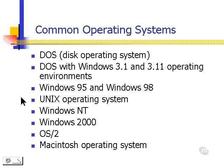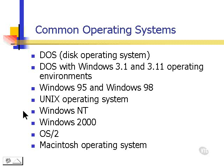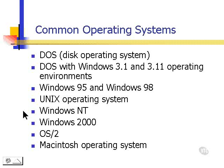Unix operating system was first on mainframe computers, and now is used on mainframe computers as well as some microcomputers. Windows NT was designed for business — NT stands for new technology. Windows NT came out around 1995 and was designed to provide businesses with a more stable and more secure operating system.